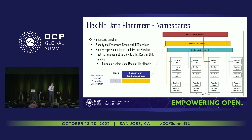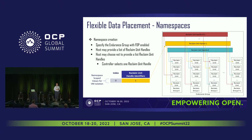For backwards compatibility, we're allowing the namespace management command to not provide this mapping of indexes to reclaim unit handles. If on the command there is no mapping provided by the host, the controller will build a map automatically. From a controller point of view, there is always this mapping of a localized namespace index identifying which reclaim unit is associated with that namespace. From the host side, they can choose to specify it or not.